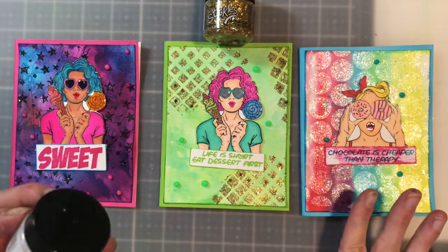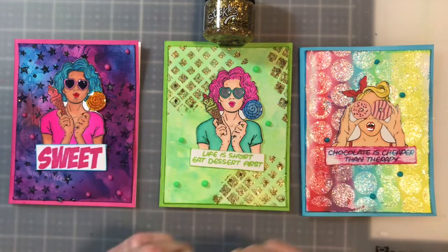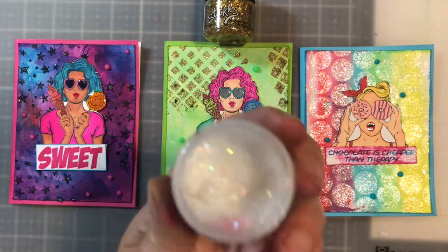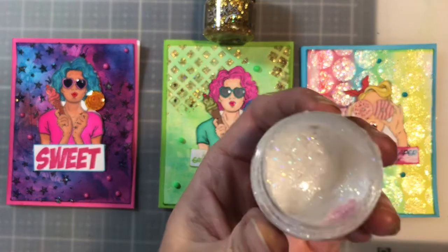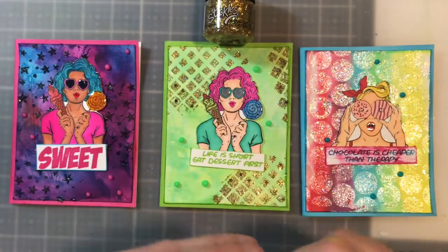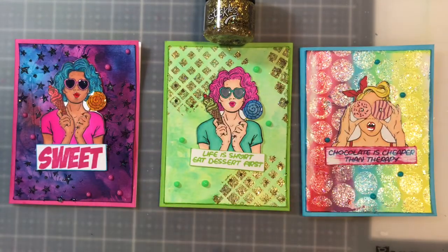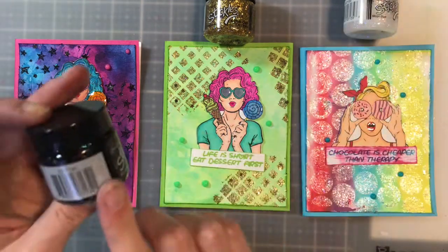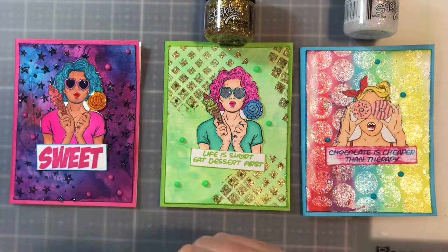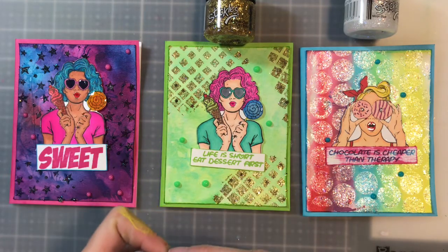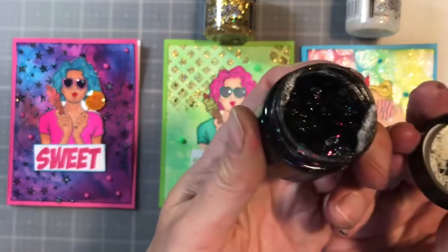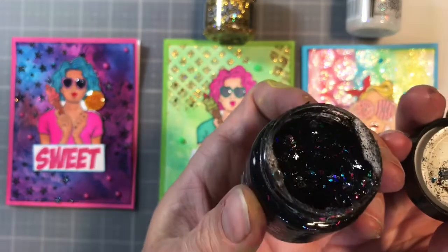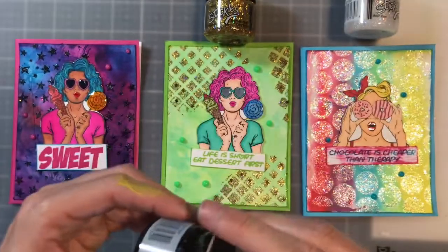Then on this one, I use the Moon Dust, and it's a beautiful, clear glitter gel. Love it. This is by Ranger. I have the link down below for you. And then on this one, I love this one so much. It's Dark Matter. I like them all. What can I say? It's hard to pick a favorite. But look at that. So, there's different kinds of fun stuff in each of these glitter gels.